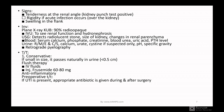For investigations: plain X-ray KUB can be done — 90% of radio-opaque stones can be seen. IVU (intravenous urography) can be done to assess renal function and hydronephrosis. USG can detect radiolucent stones, size of the kidney, and changes in renal parenchyma. Blood investigations include serum calcium, phosphate, creatinine, blood urea, uric acid, and PTH level. Urine investigations include routine microscopy, culture and sensitivity, urine calcium and urate, pH, and specific gravity. Retrograde pyelography can also be done.